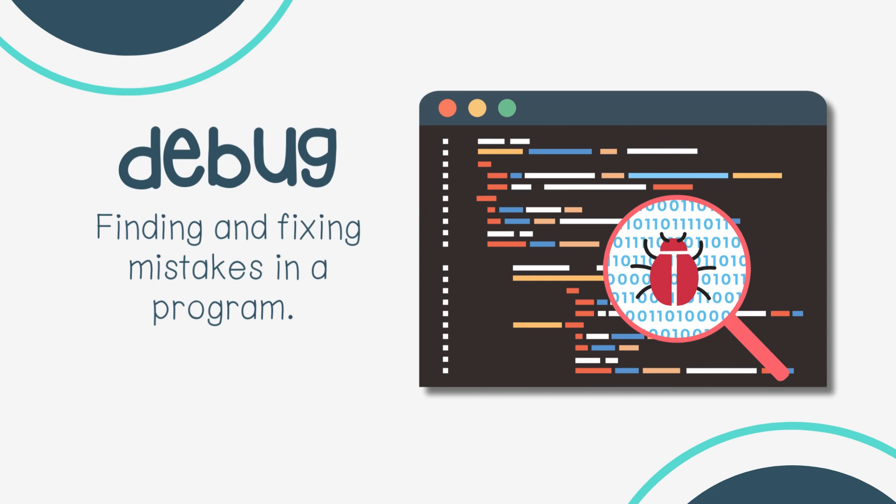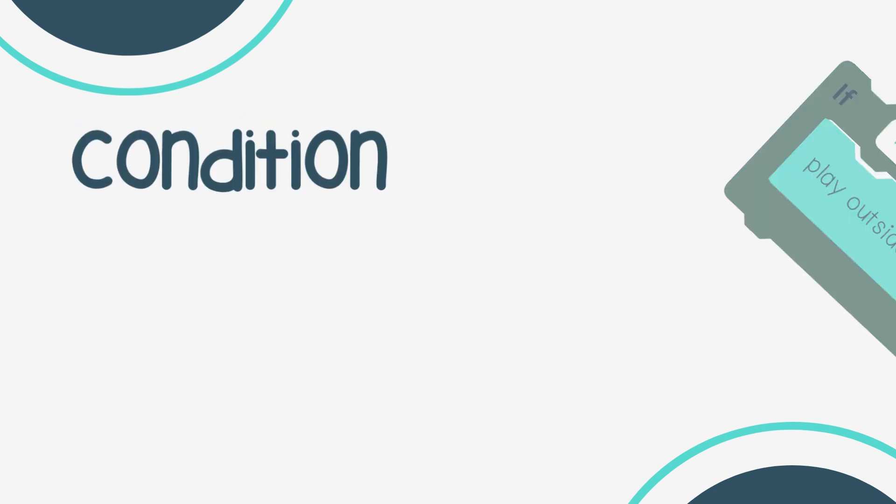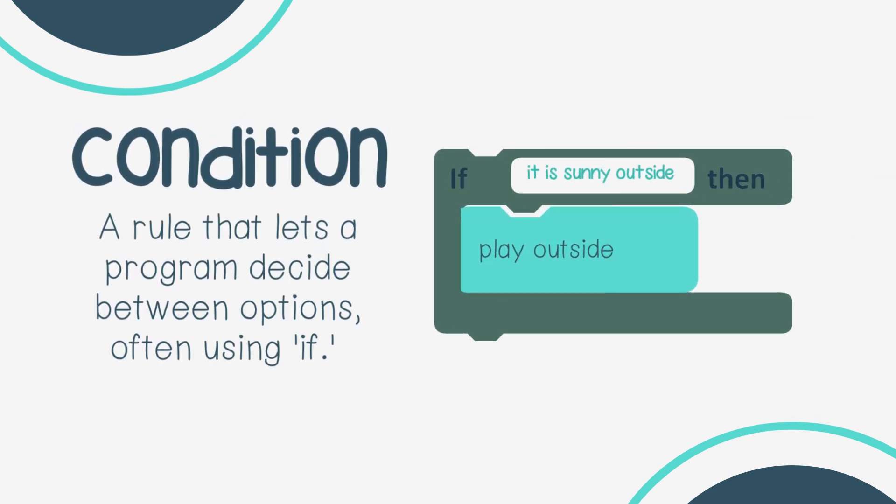Debug: finding and fixing mistakes in a program. Condition: a rule that lets a program decide between options, often using 'if' — like, if it's sunny outside, then play outside.